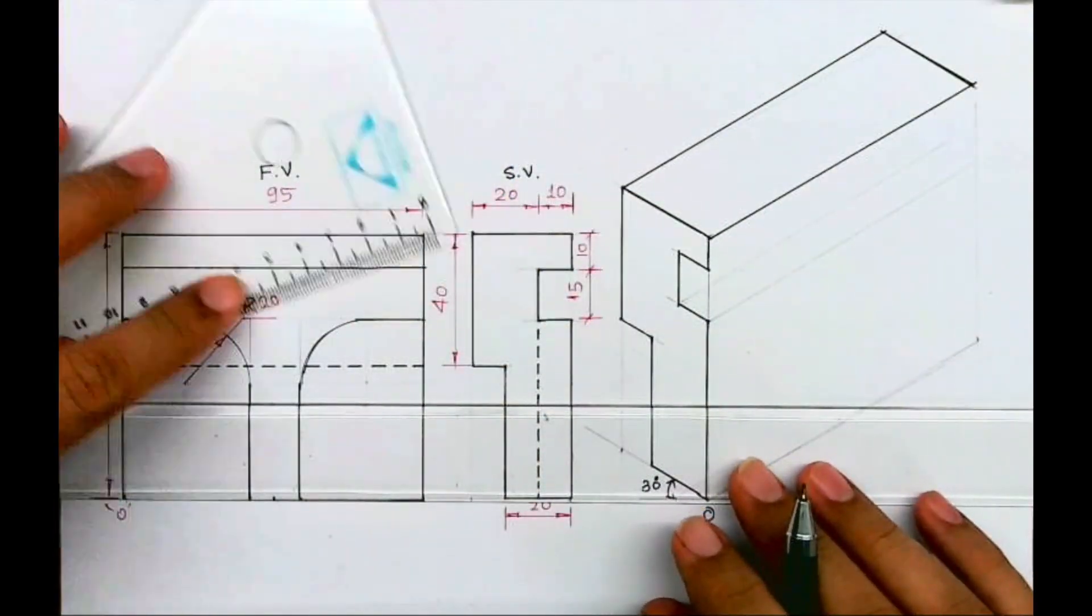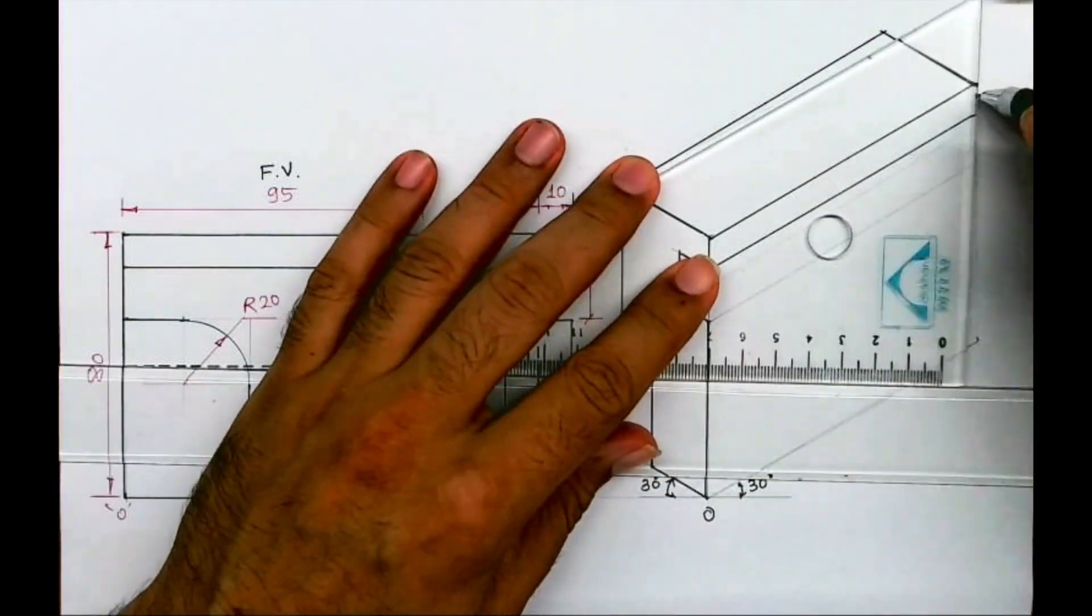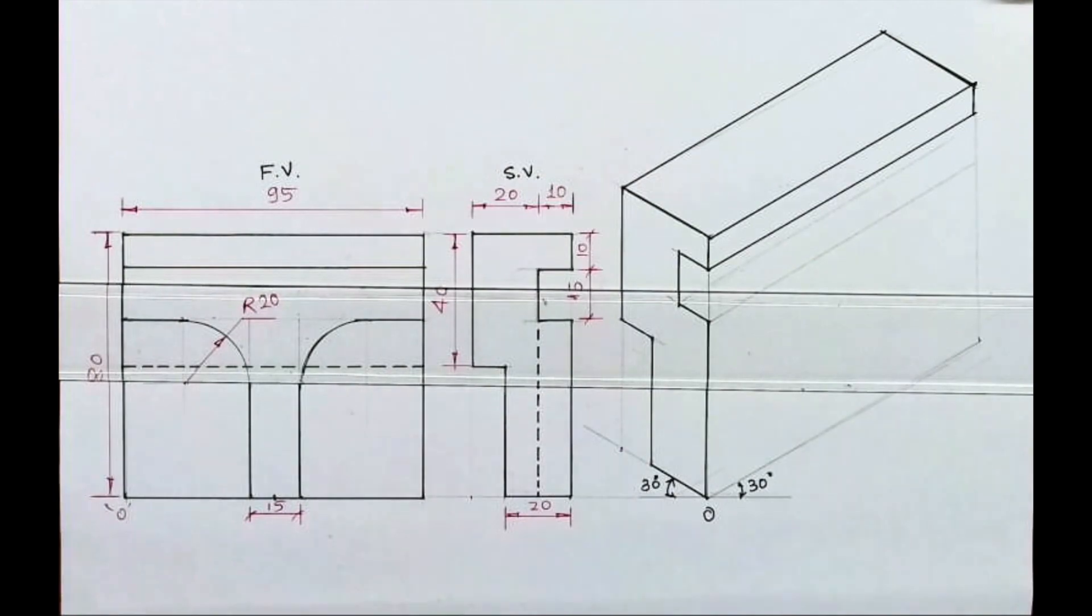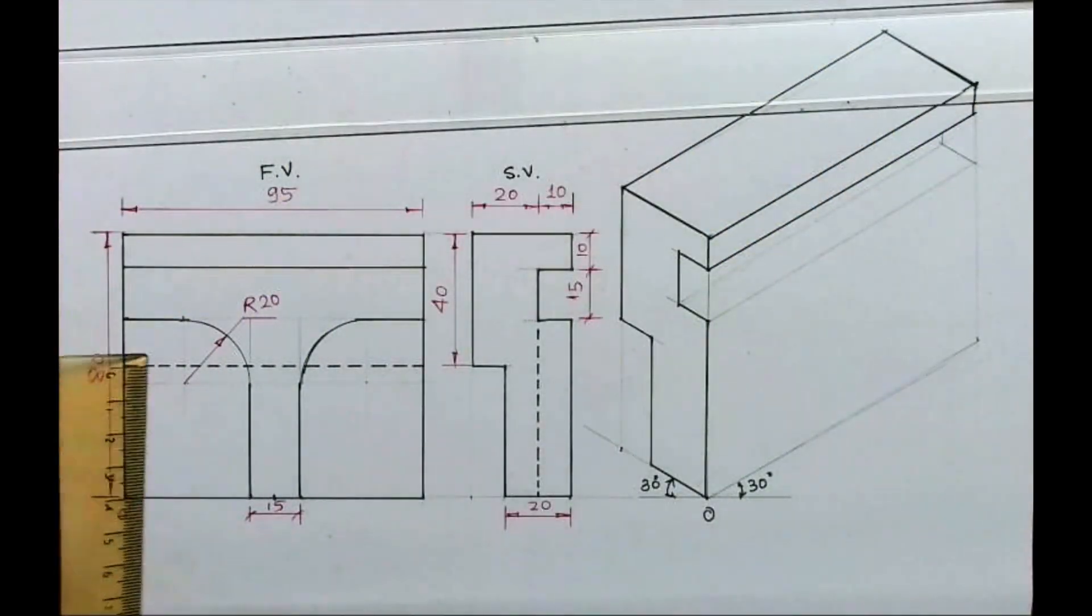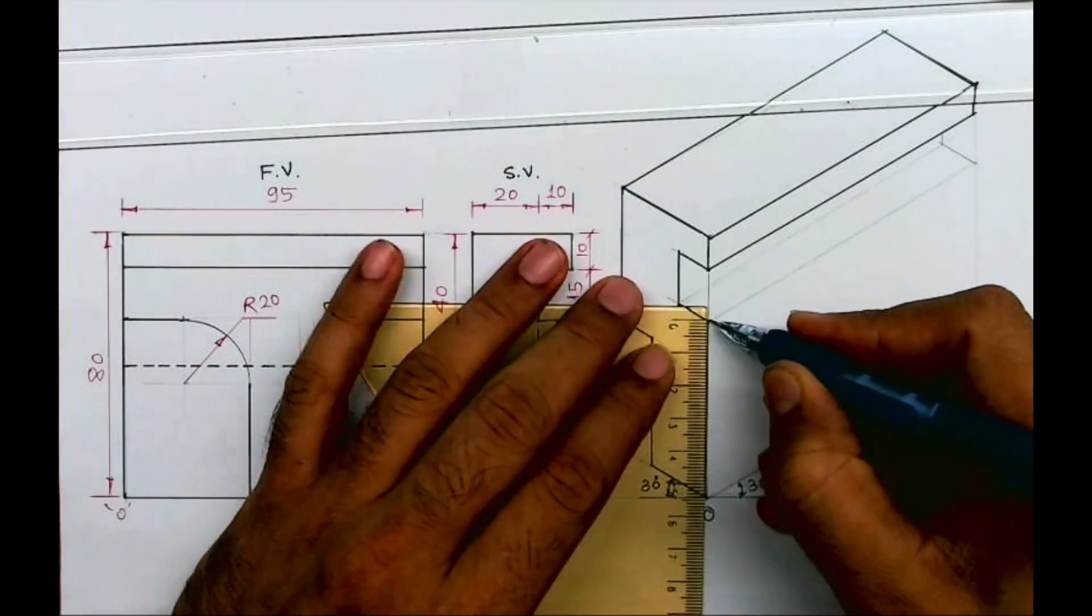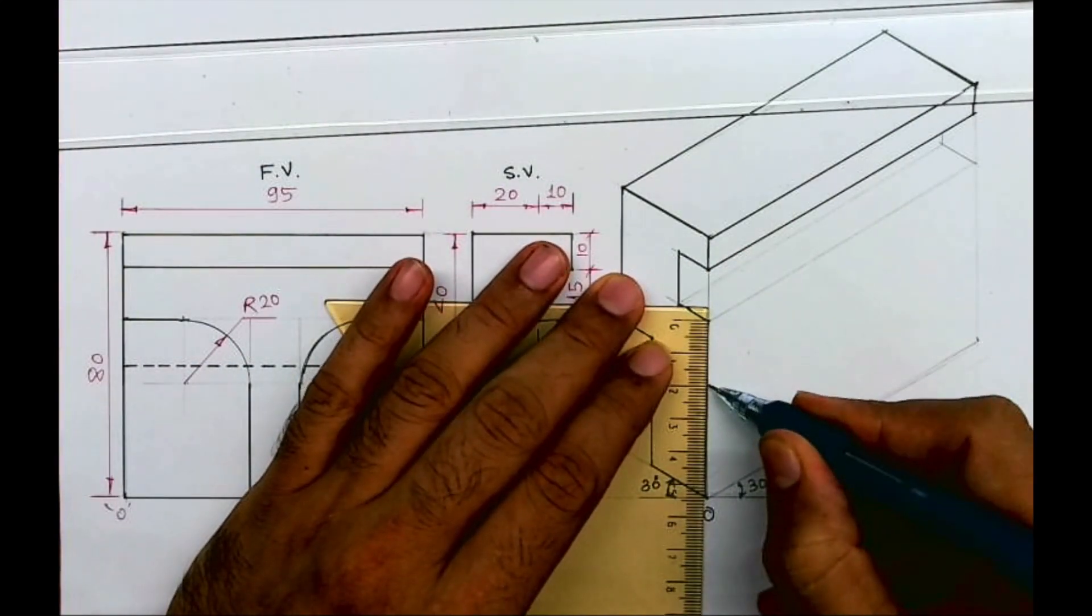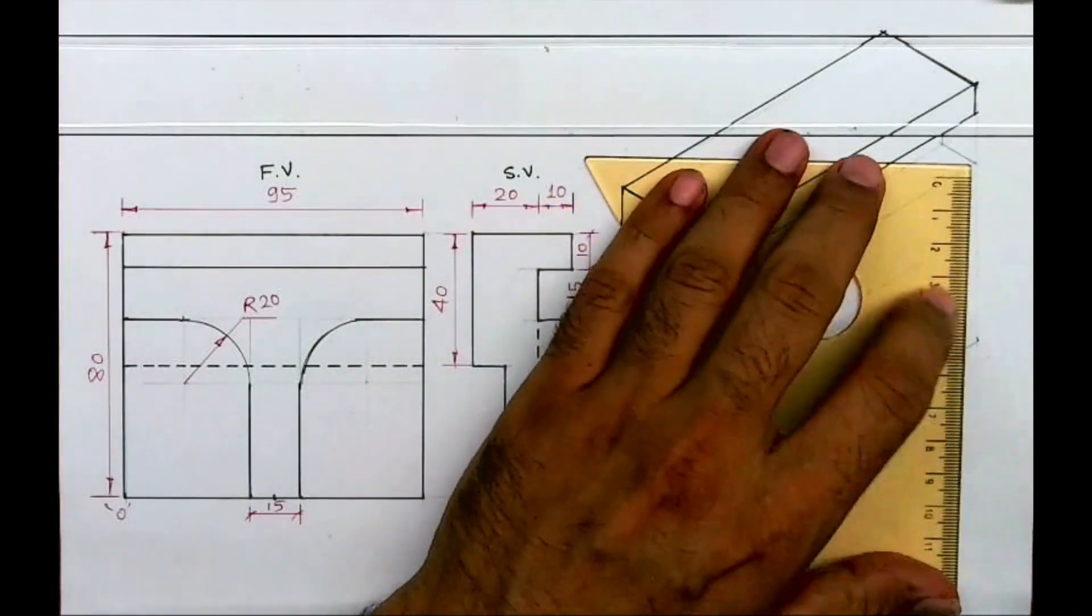See this. So we got this top part, then we can extend this. Now we need to draw these two curves. Now if you see, from here I will take 40. See, first I will take 20 to find the center point.